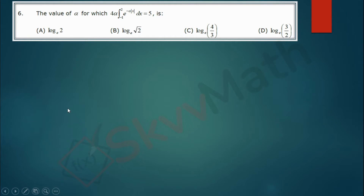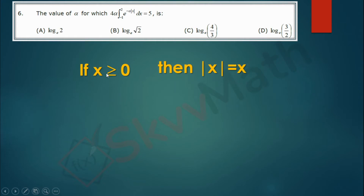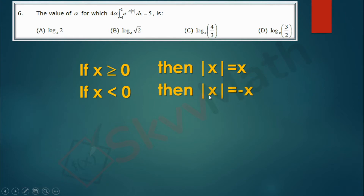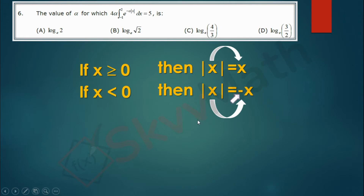Let me explain what modulus of x means. Whenever x is greater than or equal to 0, mod x equals x itself — mod x is x whenever x is non-negative. But whenever x is negative, modulus of x equals minus x. So if x is positive, mod x is itself; if x is negative, mod x equals minus of that x — you get an extra minus.